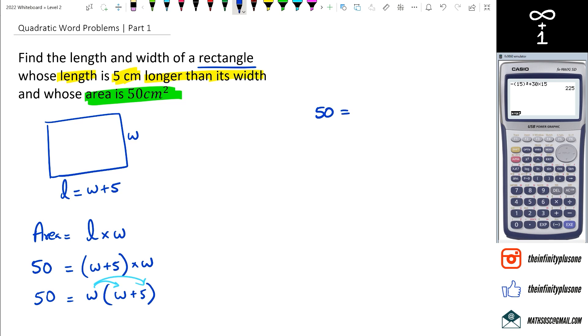So 50 equals w times w is w squared, w times 5 is 5w. And at this point I'm going to bring 50 to the right hand side and when I do that it will become minus 50. And then I've got a straightforward quadratic here, so I'm just going to factorize this. I'm looking for two numbers that multiply to minus 50 and add to 5.